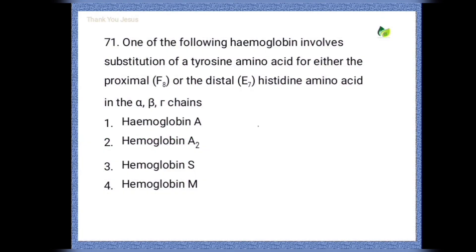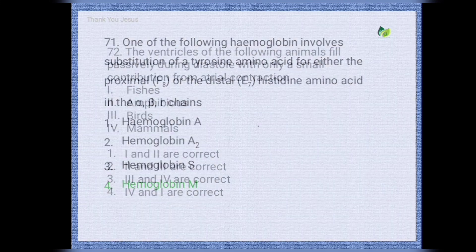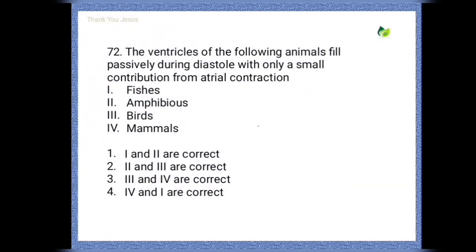One of the following hemoglobins involves substitution of a tyrosine amino acid for either the proximal or distal histidine amino acid in the alpha, beta, or gamma chains. Options are hemoglobin A, hemoglobin A2, hemoglobin S, hemoglobin M. The correct option is hemoglobin M.